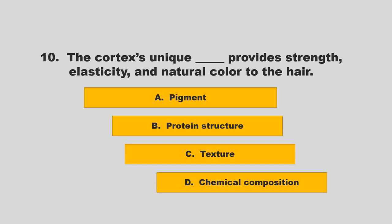The cortex's unique blank provides strength, elasticity, and natural color to the hair. Is it pigment, protein structure, texture, or chemical composition? If you chose B, protein structure, you are correct.